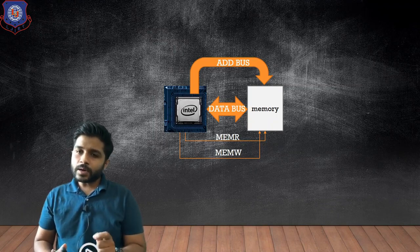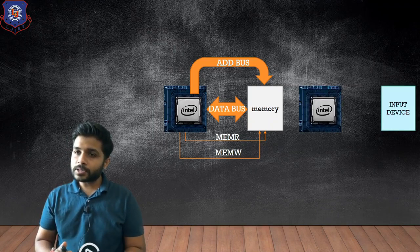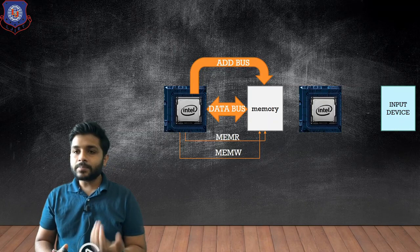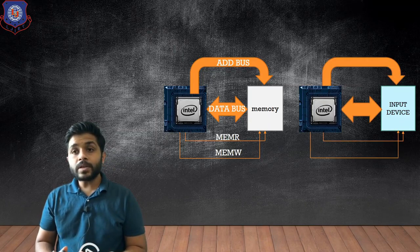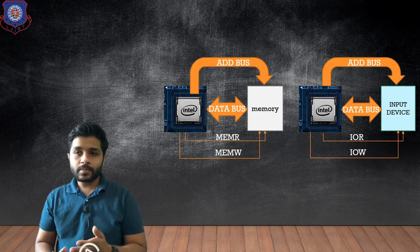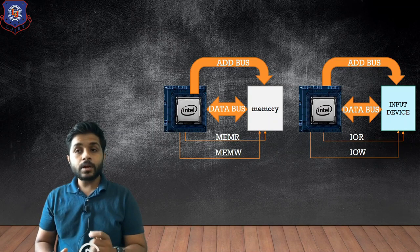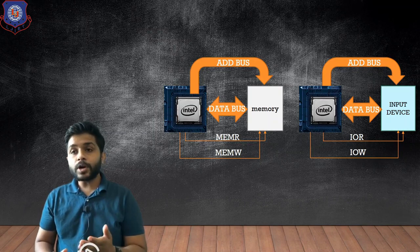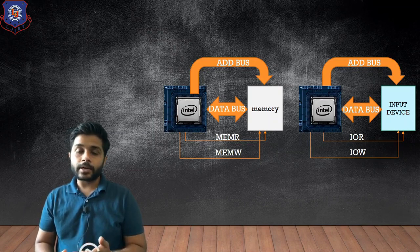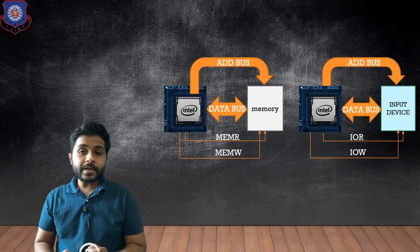If I want to connect an input/output device with the microprocessor, again I need some buses and control signals. The buses will be the address bus and the data bus, which are the same as for memory interfacing, but the control signals will be different — which are I/O read and I/O write.